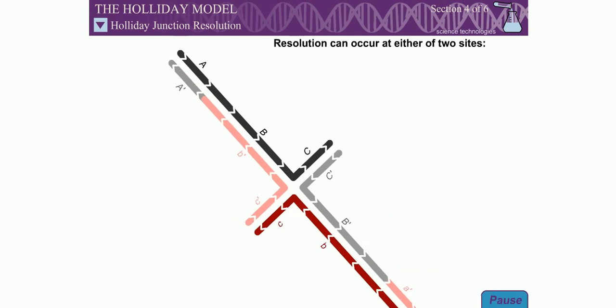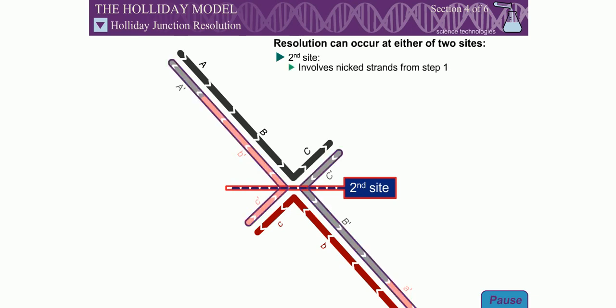The second possible cut site occurs in the pair of strands that were nicked during the first step of recombination. These strands can be easily identified because they each consist of a mix of colors at this point in the model.